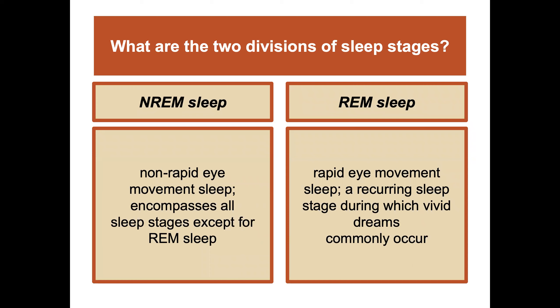What are the two divisions of sleep stages that researchers study? NREM and REM. NREM is non-rapid eye movement sleep and encompasses all of the stages except for REM, rapid eye movement sleep. REM sleep is a recurring sleep stage during which vivid dreams commonly occur — so if you're dreaming, you're in REM.